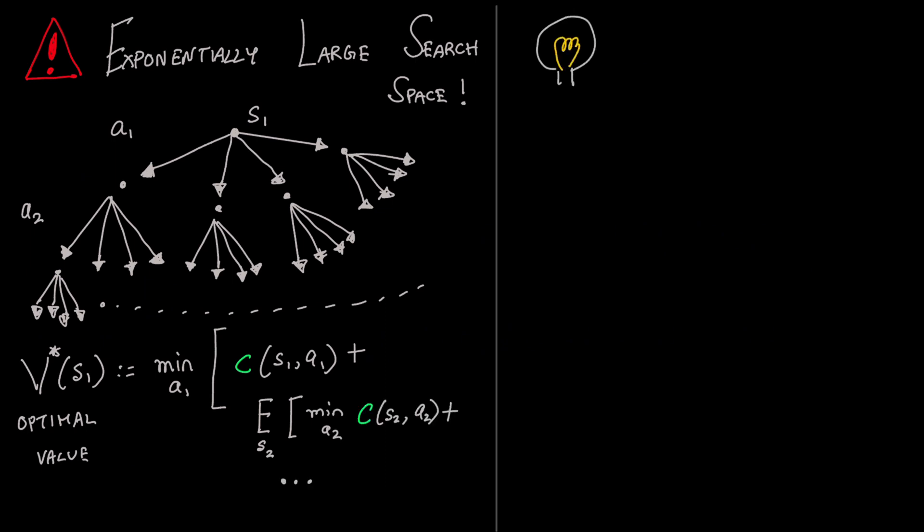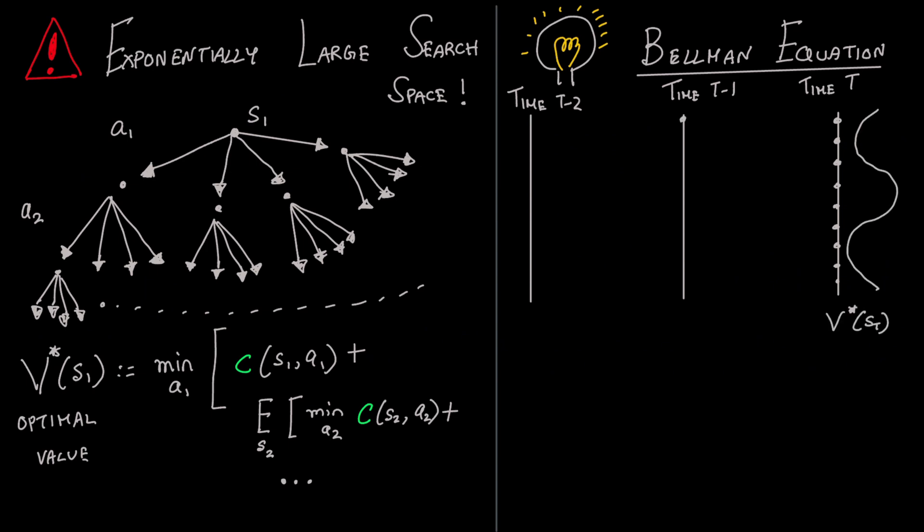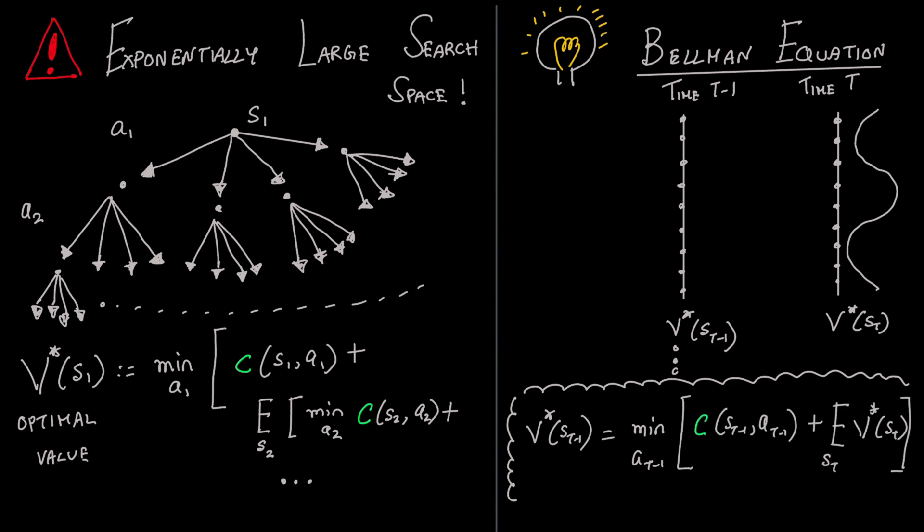Thankfully, there exists a beautiful recursive structure to the optimal value that was first discovered by Bellman. The idea is to work backwards in time, computing the values at each time step. So the value at time t is simply the minimum one step cost from that state. The value at time t minus one is the minimum sum of one step cost and the value of the next state. So for each state, look at where you end up in the next time step and choose the best action accordingly.